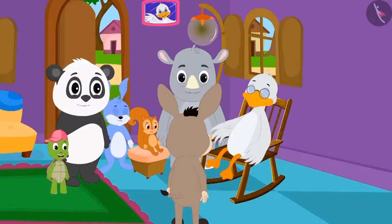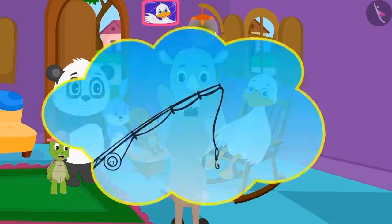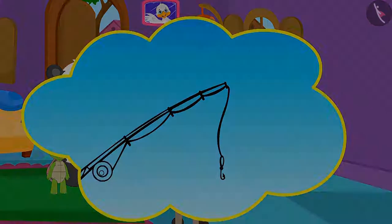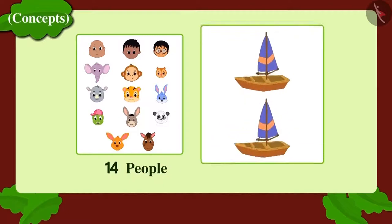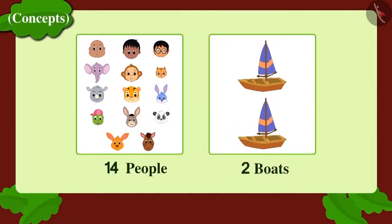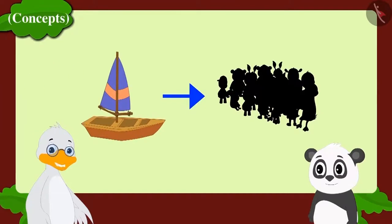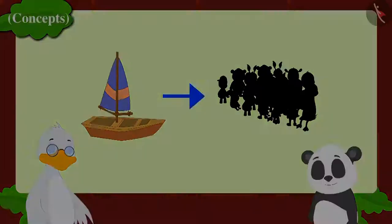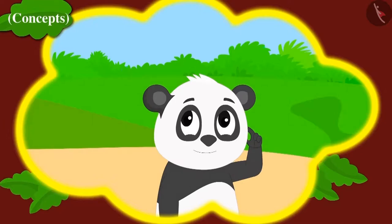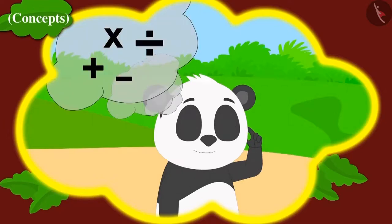One day, Badbole Chacha and some other people were going for fishing to the river together. They were 14 people in all and they had two boats. Chacha asked Golu how many people could go in each boat. Golu was unable to understand which method he could use to find the answer to this question.